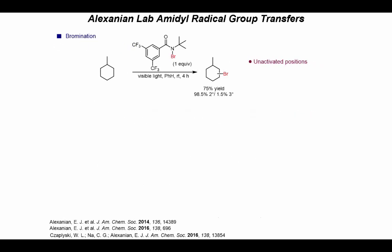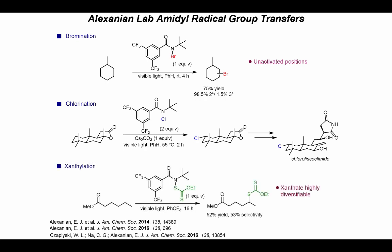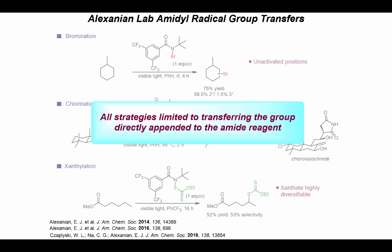Building upon this precedent, Alexanian and co-workers in 2014 disclosed a CH bromination reaction using an N-bromoamide reagent. This reaction is highly selective for secondary bromination over the electronically favored tertiary bromination products. In 2016, this was extended to CH chlorination and used in the total synthesis of chlorosulfolipid, and more recently was used in the CH xanthylation of a number of alkane substrates — with the added benefit that these xanthate products are highly diversifiable. The drawback is that we're limited to transferring the group directly appended to the amide reagent.